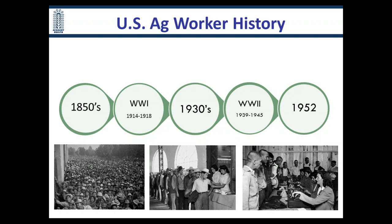Beginning in the 1850s, there were a lot of improvements in equipment and advances in crop production, which resulted in increased demand for agricultural workers. During World War I, we had labor shortages as people went off to war, creating even more demand for labor. Congress passed the Immigration and Nationality Act. Then in the 1930s, we had the Dust Bowl, a major drought that impacted the Southern Plains region, and the Depression. Those events displaced a lot of American farmers and sharecroppers, and they became migratory workers themselves.